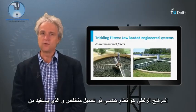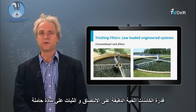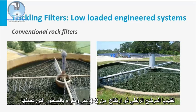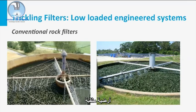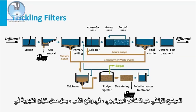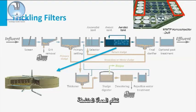A trickling filter is a low-loaded engineered system that makes use of the immobilization capacity of microorganisms on solid support material. Traditionally, a trickling filter is 2 to 4 meters high and is filled with rocks that are mounted on a perforated floor. A trickling filter is a biological reactor and, in fact, replaces the aeration tank in an activated sludge system.